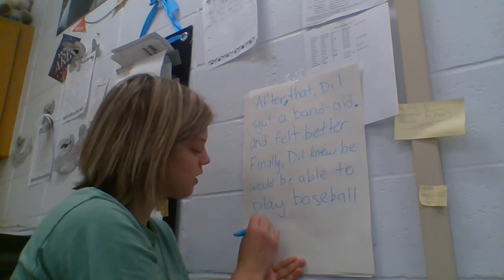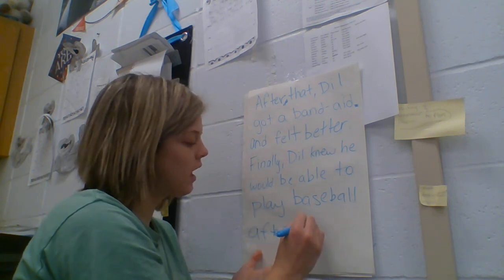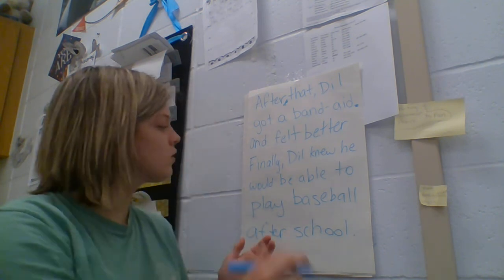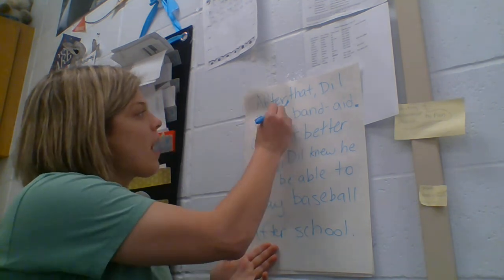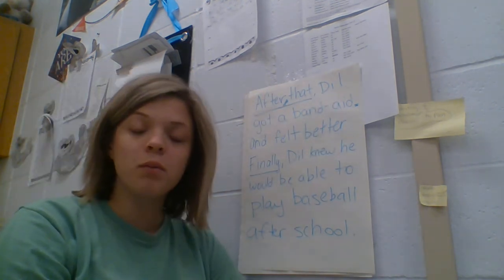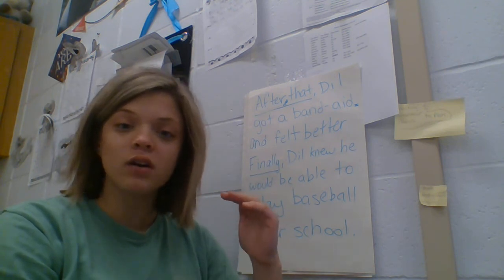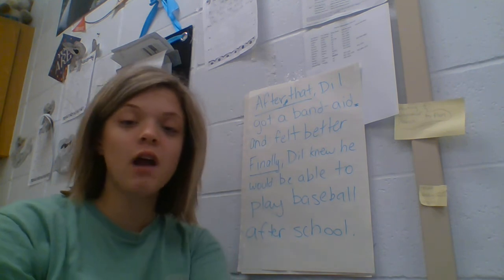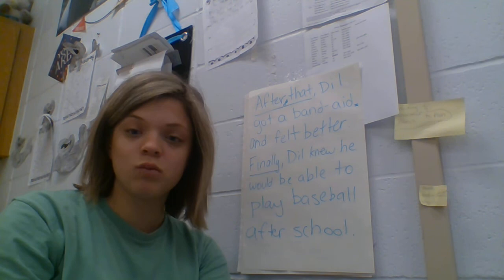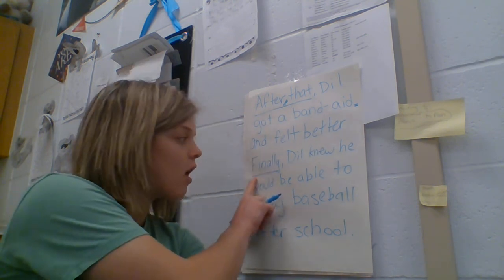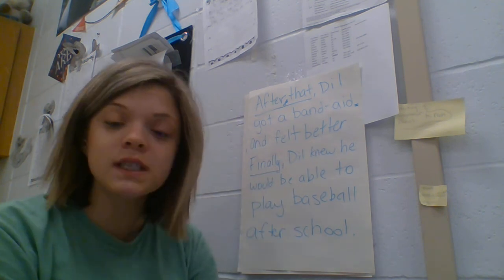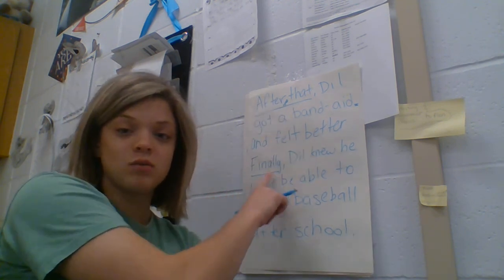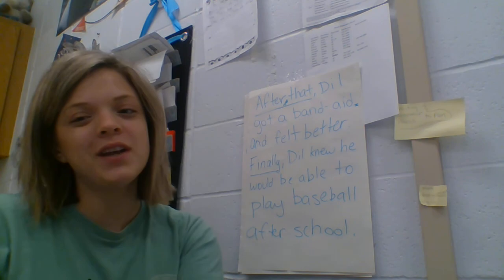Yay! His problem got solved. He went to the nurse, he got a band-aid, and he felt better and was able to play baseball after school. Do you see how when we use transition words like Finally, comma and After that, comma — those help our writing to be sequenced so that your reader can follow your story? It helps it flow better. In your writing this week, I want you to practice using transition words. They always start with a capital letter and then you use a comma. Use this information in your AMI packets to help your writing. Hope to see you in the next video.